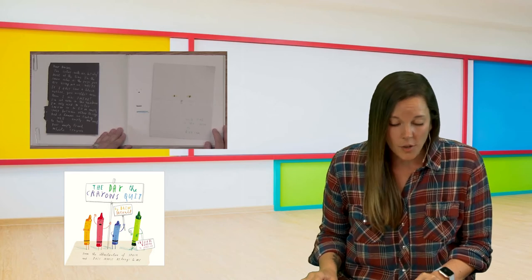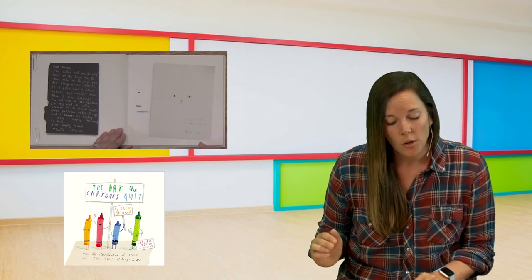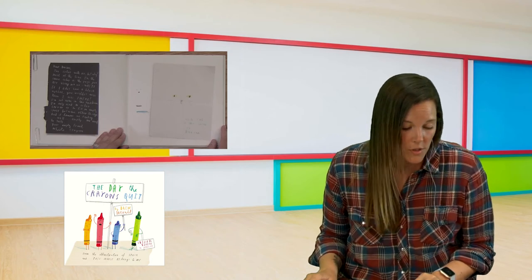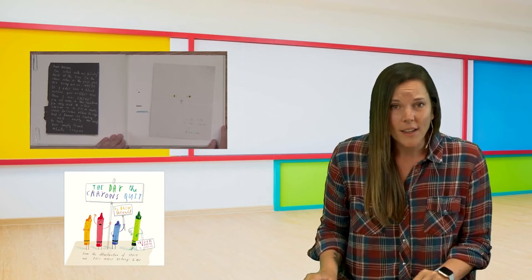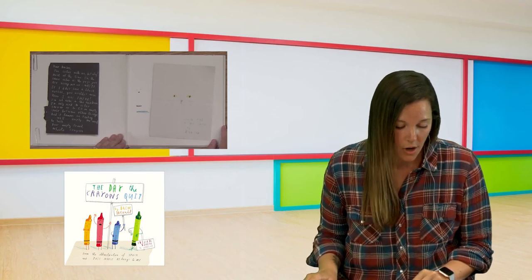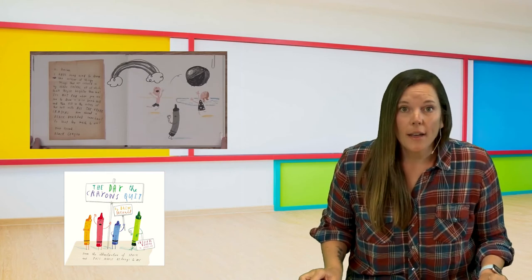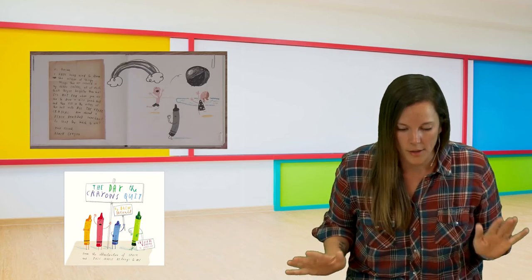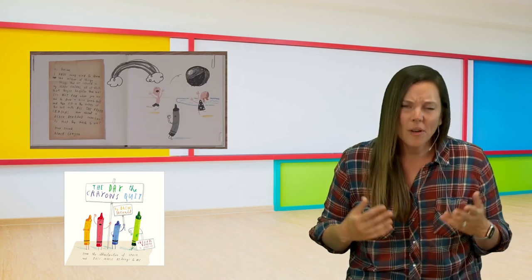Dear Duncan, you color with me. But why? Most of the time, I'm the same color as the page you are using me on. White. And if I didn't have a black outline, you wouldn't even know that I'm here. I'm not even in the rainbow. I'm only used to color snow or to fill an empty space between other things. And it leaves me feeling, well, empty. We need to talk. Your empty friend, White Cram. Hi, Duncan. I hate being used to draw the outline of things. Things that are colored in by other colors, all of which think they're brighter than me. It's not fair that when you use me to draw a nice beach ball and then you fill it in with all the other colors. How about a black beach ball sometime? Is that too much to ask? Your friend, Black Cram.